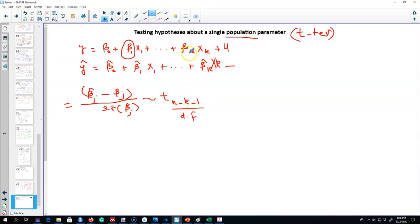Remember, there are k parameters in this equation plus one intercept parameter. That's why n minus k minus one will be our degrees of freedom.